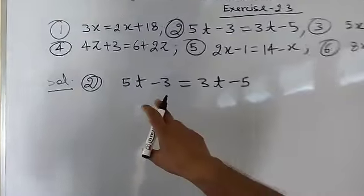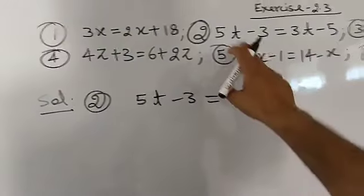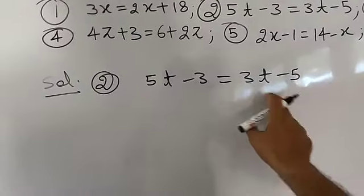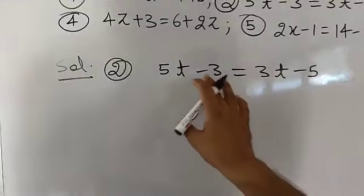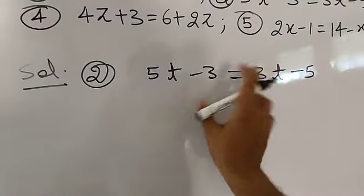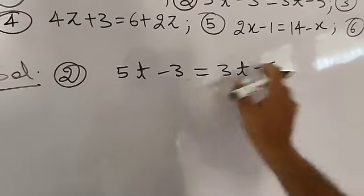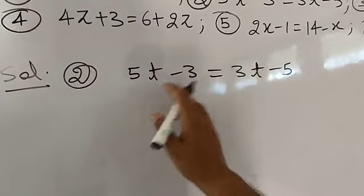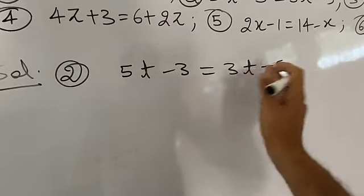Here I have written the second question: 5t minus 3 equal to 3t minus 5. I am going to give the solution of this question. Here 5t and 3t are the variable terms, and minus 3 and minus 5 are the numerical values. You need to send the variable term to one side. So, 3t is on the right side and needs to be transferred to the left side.